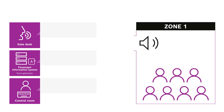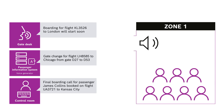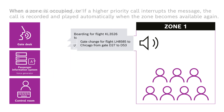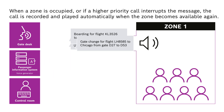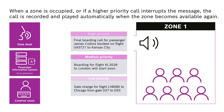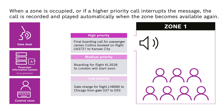For example, three announcements come in from three different locations. What does call stacking do? When a zone is occupied, or if a higher priority call interrupts the message, the call is recorded and played automatically when the zone becomes available again.